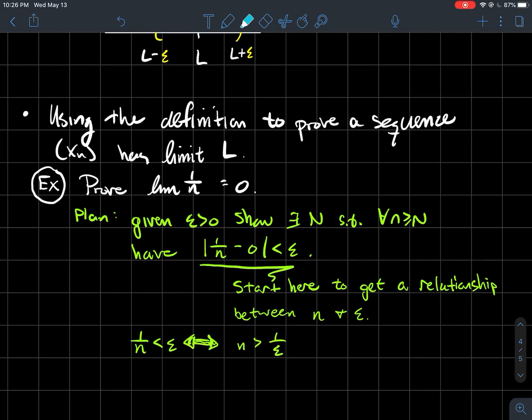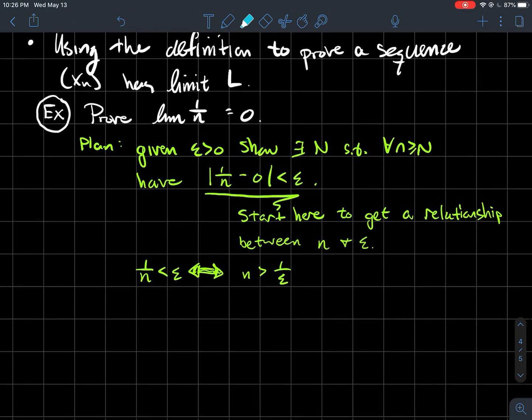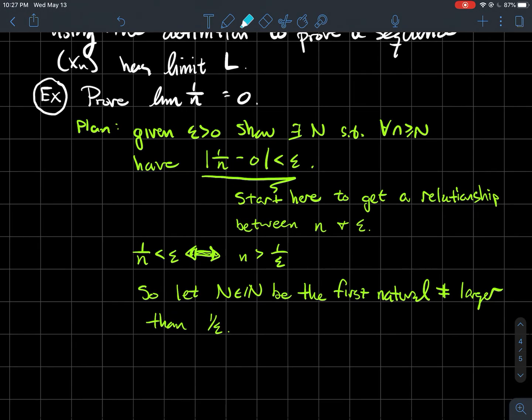Once we've solved for n, we're almost done. Let capital N be the first natural number larger than 1/epsilon.